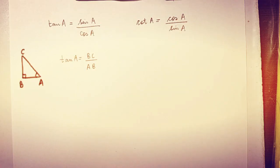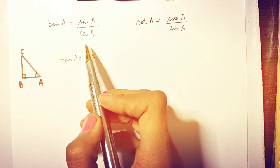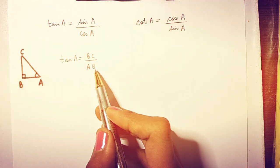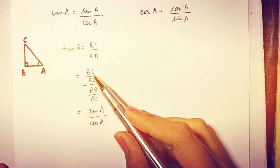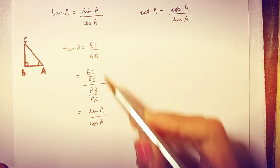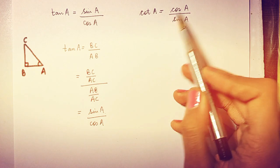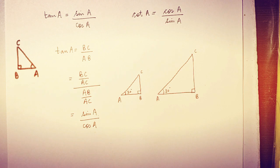In this case you can observe that tangent A is nothing but equal to the ratio of sin A and cos A. We can prove it too. See, tangent A in this triangle will be equal to BC upon AB. Now divide these two by AC, that is the hypotenuse. So BC upon AC is nothing but your sin of angle A, and AB upon AC is your cos A. So we can derive and prove it too. Similarly, cot A is equal to cos A upon sin A, and we can prove it too.